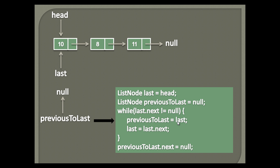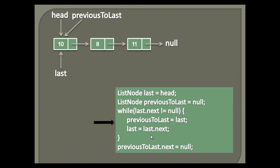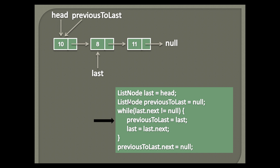Thus, the statement in the while loop executes. The first statement points previous to last node to last node, which is the head node. The second statement assigns last's next node to last — that is, it traverses last node to the second node. Now again it checks the while loop condition. Last node points to second node, whose next points to third node, which is not null. Therefore it again executes the statements in the while loop. Now it points previous to last node to last, which is the second node, and last node traverses to the third node.